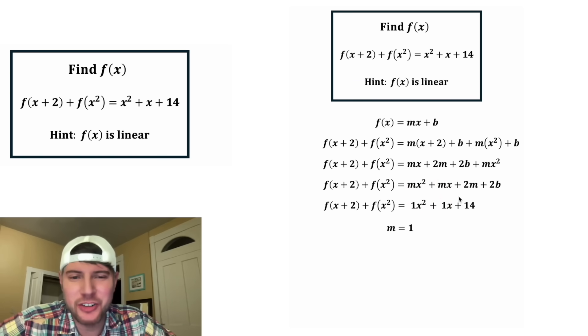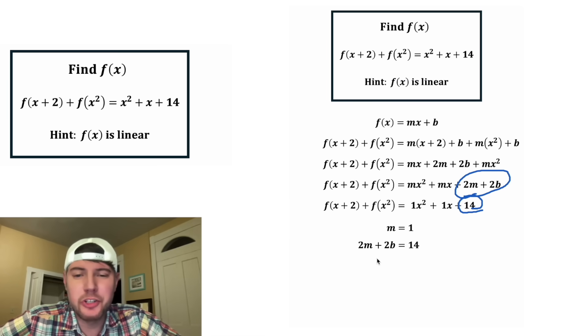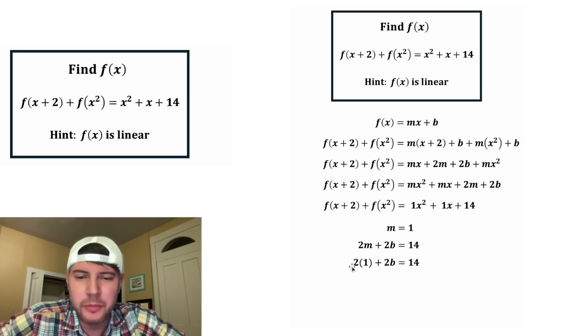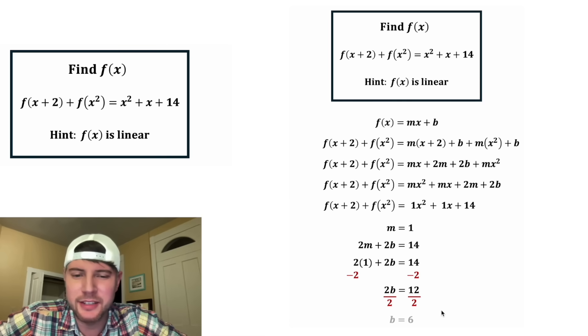And then using the same logic, we would need these two constants to always be equal. So we know 2m plus 2b is equal to 14. Since we know that m is equal to 1, in the place of this m, we can substitute 1. From here, we can subtract 2 from both sides, and we end up with 2b is equal to 12. And after we divide both sides by 2, we end up with b is equal to 6.